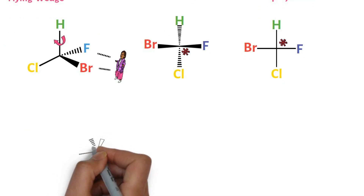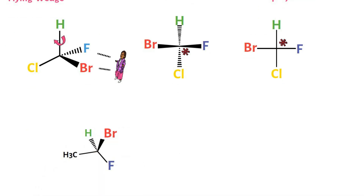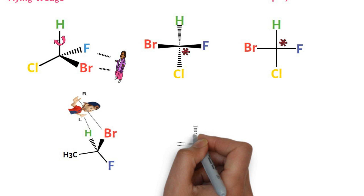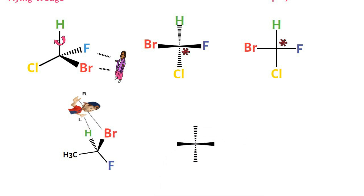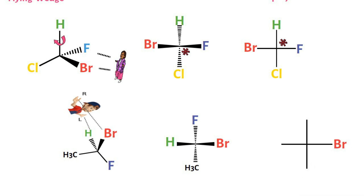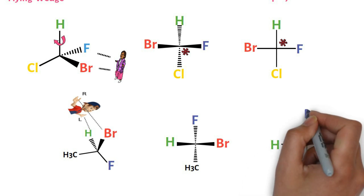Similarly, consider this flying wedge projection. To convert into Fischer projection, stand in between the wedge and dash so that you see through the chiral carbon. You see bromine on the right and hydrogen on the left, both coming out towards you — put these on the right and left wedges of the bowtie. You see fluorine pointing up and methyl down, both going away from you — put these on the vertical top and bottom dashes of the bowtie. Now make a cross and put the groups as they are on the bowtie. This gives the Fischer projection.